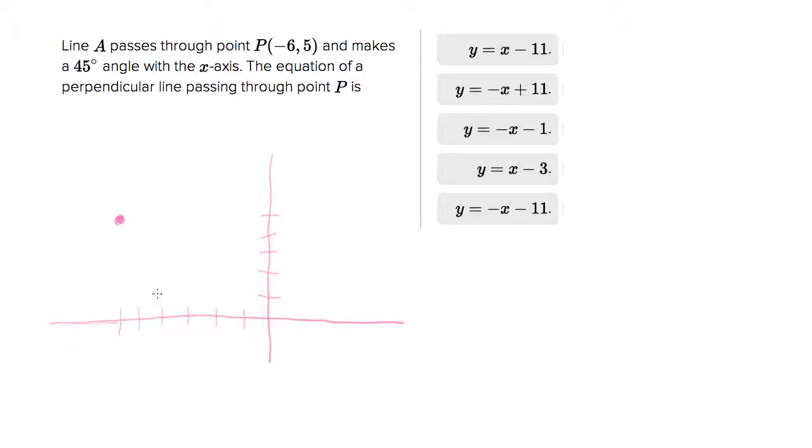It makes a line A that passes through point (-6, 5) and makes a 45 degree angle with the x-axis. Now one of the challenges here is that the line passes through that point and makes a 45 degree angle with the x-axis.